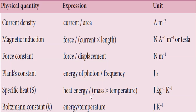Specific heat is heat energy divided by mass into temperature. Energy is in joules, mass is kilogram, and temperature is Kelvin, so the unit is joule per kilogram per Kelvin. Boltzmann's constant is energy by temperature — that is joule per Kelvin.